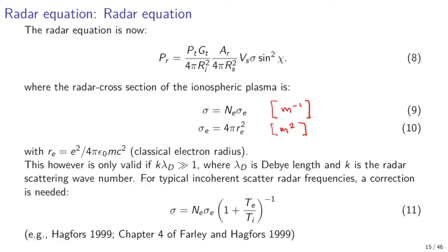We have now arrived at an expression for received radar power from a volume of the ionosphere. Combining the scattering cross-section of a single electron with electron density gives a radar cross-section per unit volume with units of m⁻¹. However, this expression for sigma needs revision: it is only valid for very high frequency radars where the wavelength is much smaller than the Debye radius, which is not typically the case. For frequencies commonly used for incoherent scatter radars, we must account for collective interactions between the constituents of plasma — so the scattering cross-section per unit volume also depends on electron and ion temperatures. This is given by equation 11; see Hagfors or Farley and Hagfors for more details.